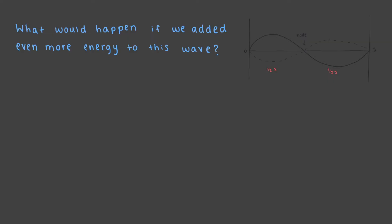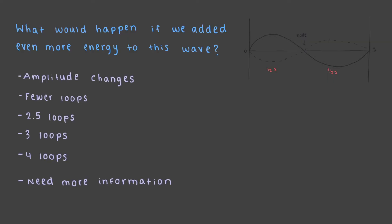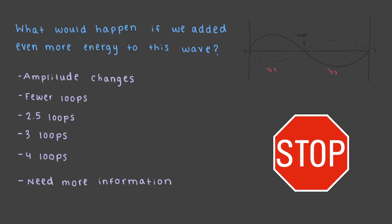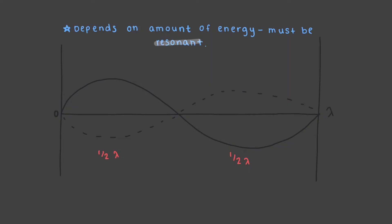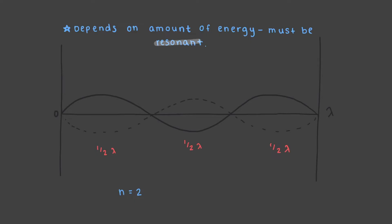What would happen if we added even more energy to this wave? Depending on the amount of energy, either nothing happens because there is no resonance, or we add a whole number of loops. Adding some energy might transform our two-loop wave into a three-loop wave, or adding a relatively higher amount of energy might transform it into a four-loop or five-loop wave.